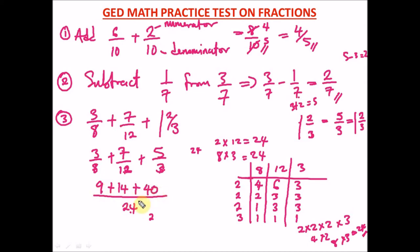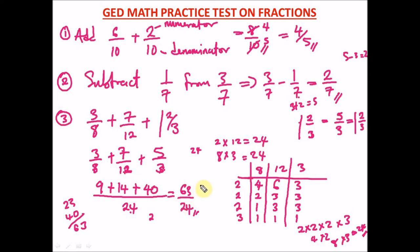9 plus 14 is 23, and 23 plus 40 gives us 63. So we have 63 over 24. We can't leave it this way because it's an improper fraction — the numerator is bigger than the denominator. We need to convert to a mixed fraction.